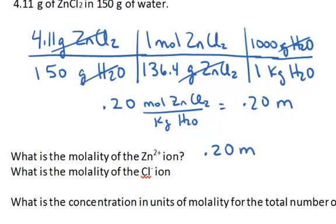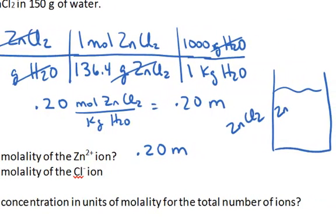Because think again, when I put this in solution. Now this time, when I put the zinc chloride into the solution, I have a zinc ion floating around. And for every one zinc ion floating around, I'm going to end up with two chloride anions floating around.